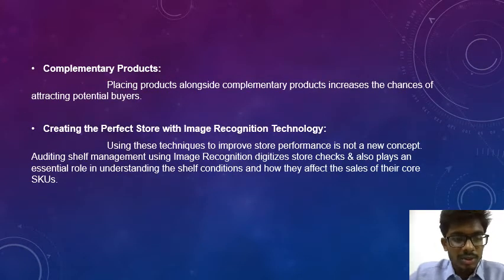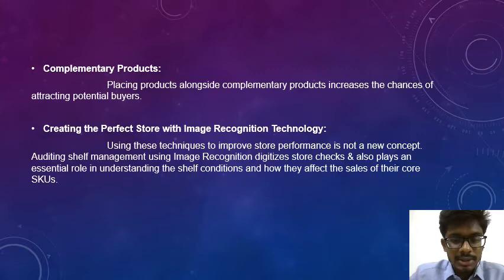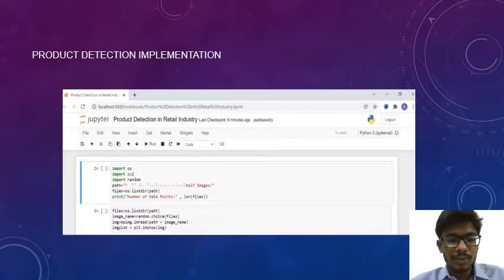Next, we are moving into the use case of complementary products. Placing products alongside complementary products increases the chance of attracting potential buyers. Finally, we are looking at the perfect store concept — creating the perfect store for better customers and better business with image recognition technology. Auditing shelf management using image recognition, digital store checks, also plays an essential role in understanding shelf conditions and how they affect the sales of core SKUs.